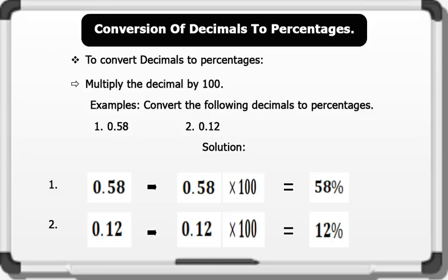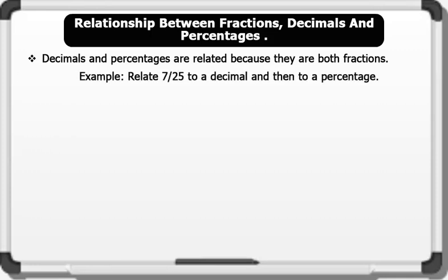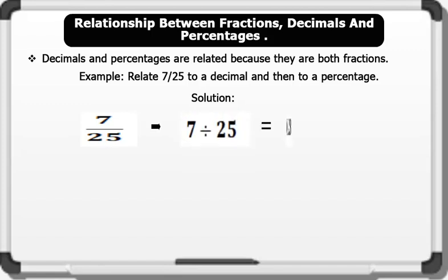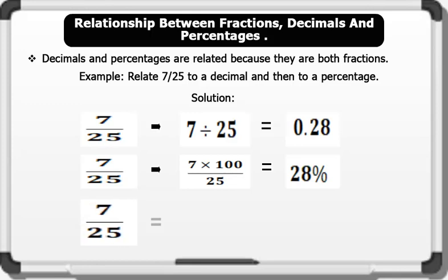Now let's see the relationship between fractions, decimals, and percentages. Fractions, decimals, and percentages are related because they are all fractions. Example: 7/25 as a decimal equals 7 divided by 25, which gives 0.28; 7/25 as a percentage equals 7 times 100 divided by 25, which gives 28%. Therefore, 7/25 in fraction equals 0.28 in decimal and 28% in percentage.